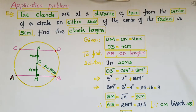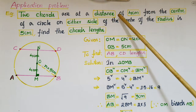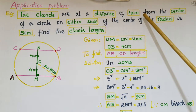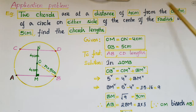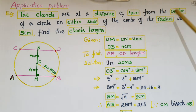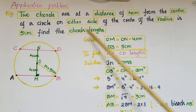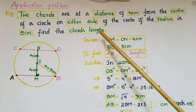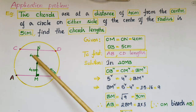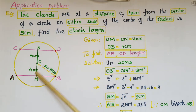This is an application problem. Two chords are at a distance of 4 centimeters from the center of a circle on either side of the center. If the radius is 5 centimeters, find the chord lengths. The distances from the center to the chords are 4 centimeters each.